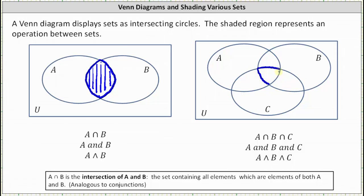This region here represents the set containing all the elements in set A and set B and set C. This is the intersection of the sets A, B, and C.